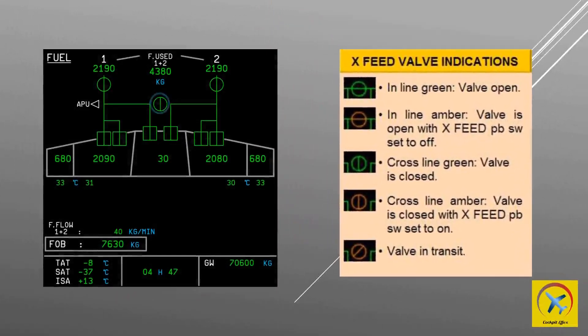The cross feed system enables any engine to be fed from any tank. It is used to correct fuel imbalance between tanks or during gravity feeding of the engines. Cross feed valve indications: in-line green means valve is open; in-line amber means valve is open with the cross feed push button switch set to off; cross-line green means valve is closed; cross-line amber shows valve is closed with the cross feed push button switch set to on; amber half-open or close shows valve is in transit.